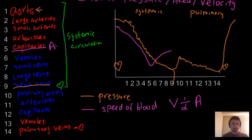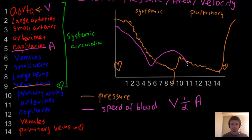Inside the capillaries, speed is at its lowest. But at the venules and small veins, it actually goes back up, reaching near number nine on the diagram. This is because velocity is inversely proportional to area — as total cross-sectional area decreases in the veins, speed increases again. In pulmonary circulation the same pattern repeats: speed drops off to the lung capillaries and then rises again.